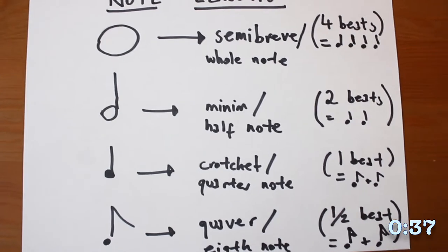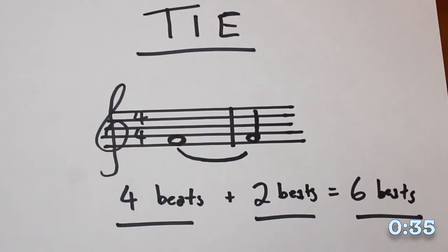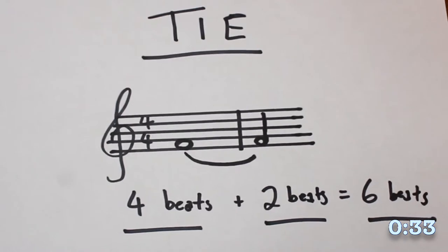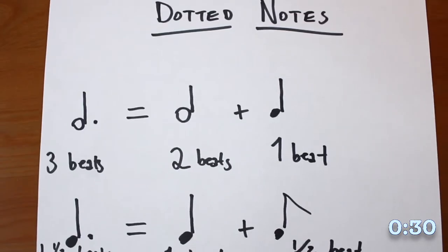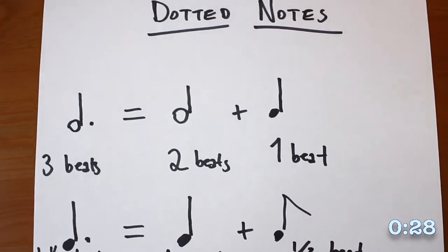This is how long you need to hold on each note for. If you have the line connecting two of the same note, then it adds the notes together. That's called a tie. If you add a dot after a note, then you add half of the original note value to it.